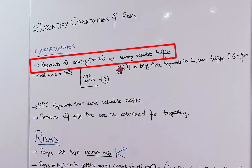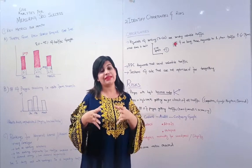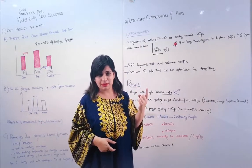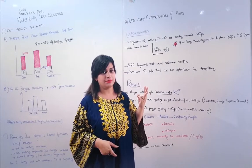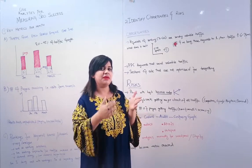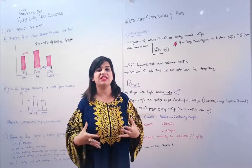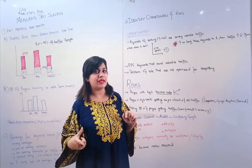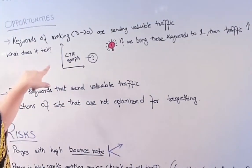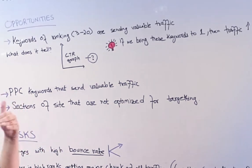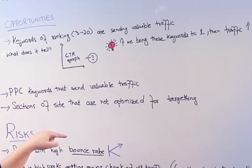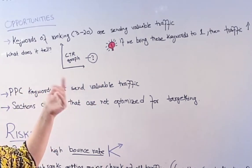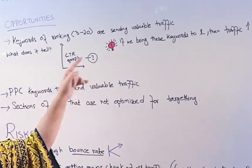For example, in opportunities: keywords ranked from position 3 to 20 are sending a significant amount of traffic to your pages. Number one and two are not ranking, but for 'best leather shoes' you rank at number three. Since positions 3 to 20 are still sending traffic, and from the CTR graph we know click-through rate increases six to seven times from previous pages, you should try to move these keywords from position 20 to 10, to 5, to 2, to 1 — so that your traffic increases six to seven times.